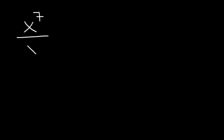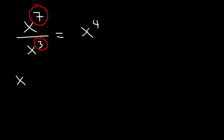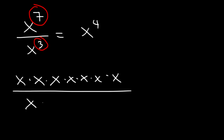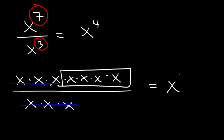Now what about dividing? Let's say x to the seventh divided by x cubed — what is that equal to? When you're dividing, you need to subtract the exponents. 7 minus 3 is 4. x to the seventh equals seven x variables being multiplied together, and x cubed represents three x variables. If you cancel three on top and three on the bottom, you'll have four left over on top — so x to the fourth.